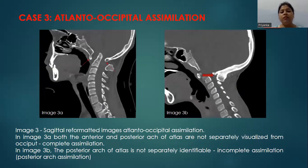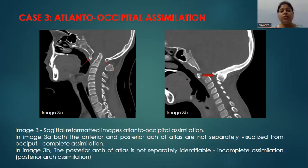These are sagittal reformatted images demonstrating atlantooccipital assimilation. In image 3A, both the anterior and posterior arch of the atlas are not separately visualized from the occiput, suggestive of complete assimilation. Whereas in image 3B, only the posterior arch of the atlas is not visualized separately, indicating incomplete assimilation — that is, posterior arch assimilation.